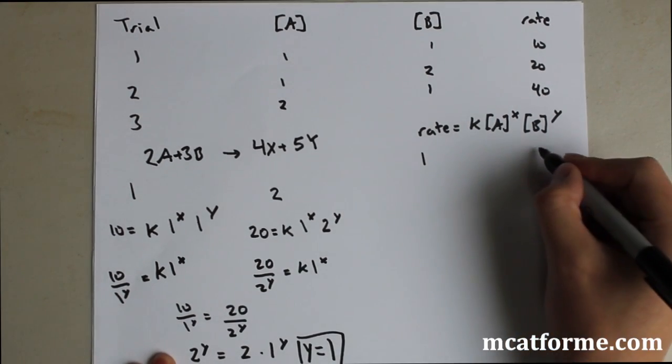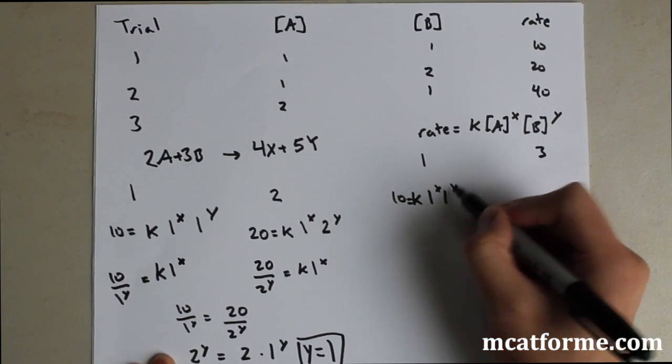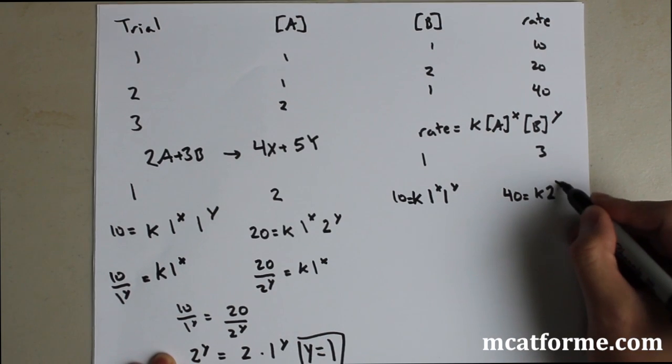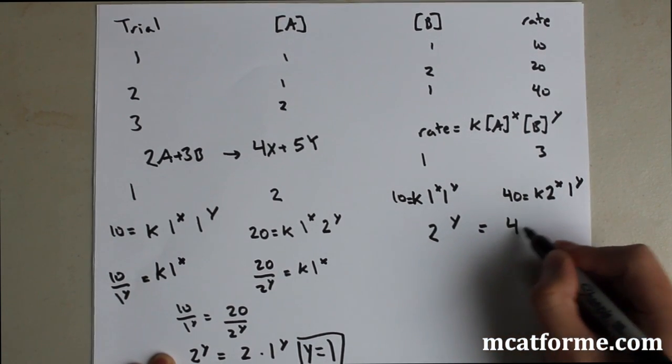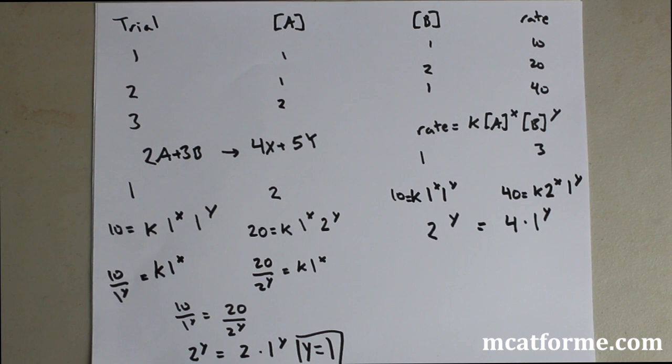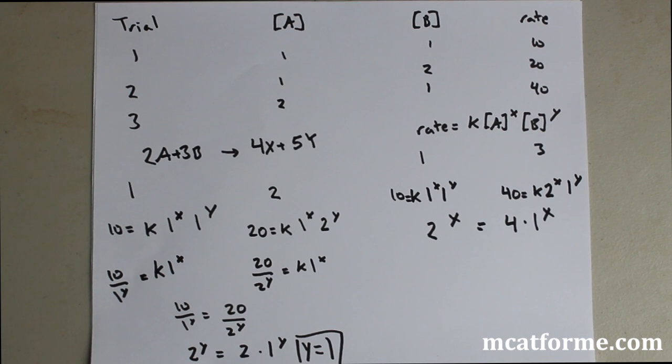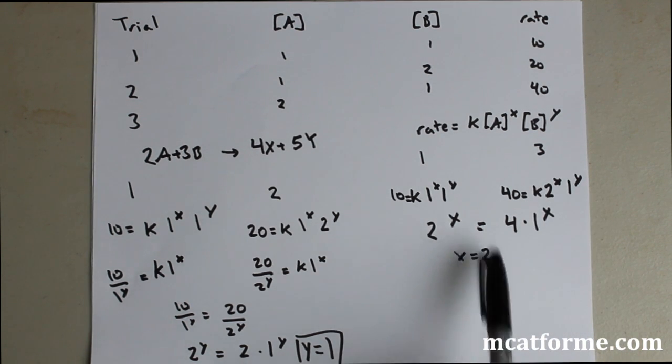We're going to do the same thing with trial 1 and trial 3. So we have 10 equals K times 1 to the X times 1 to the Y, similarly. And we're going to do trial 3, which is going to be 40 equals K times what is going to be 2 to the X times 1 to the Y. We're going to move everything around, same thing as before. And we're going to get 2 to the Y equals 4 times 1 to the Y, and you're going to have to do a couple manipulations. So what we're going to find is that X—this is going to be X—2 to the X equals 4 times 1 to the X. That is going to show us that X has to equal 2, because 2 to the X equals 4 times that number. 1 to the 2 is 1, 2 to the 2 is 4, so that will solve for that.